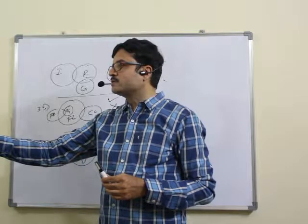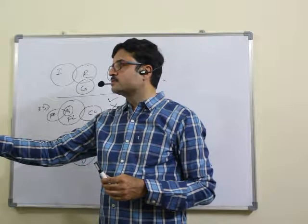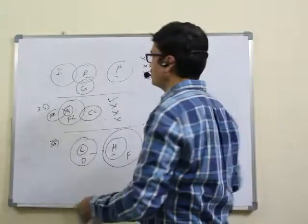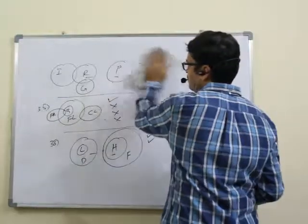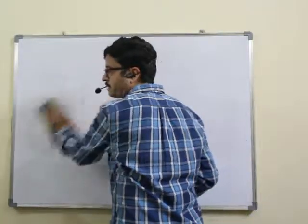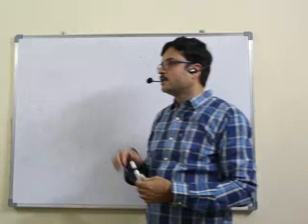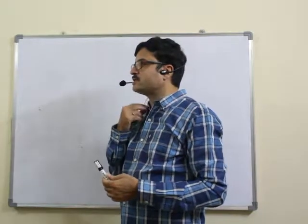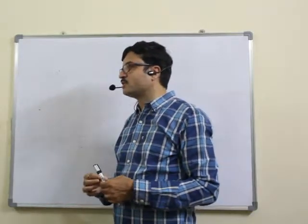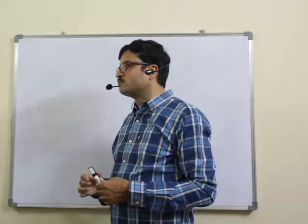Questions 36 to 40 are based on mixed series. Let us discuss the logic. Question 36: four of the following five are similar in a certain way based on the positions of the elements of the above arrangement and hence form a group. Which one does not belong to the group?